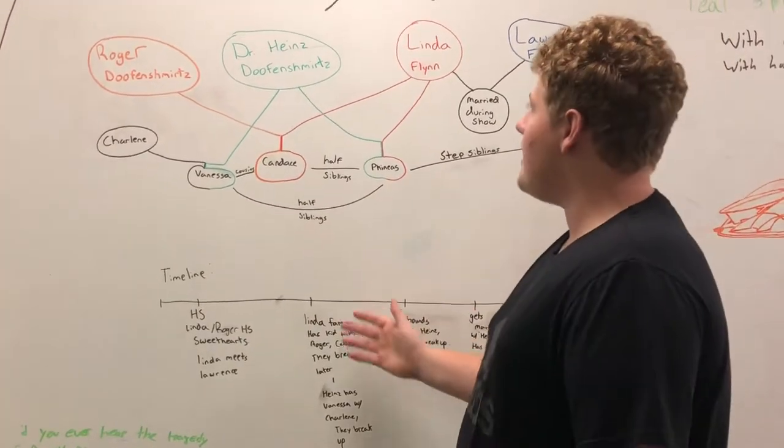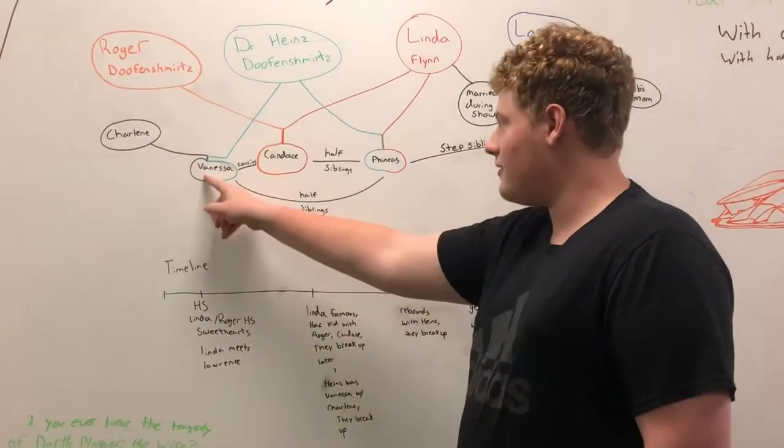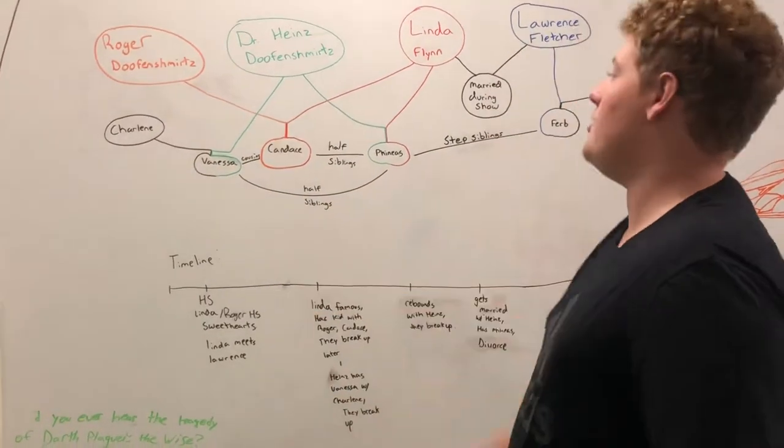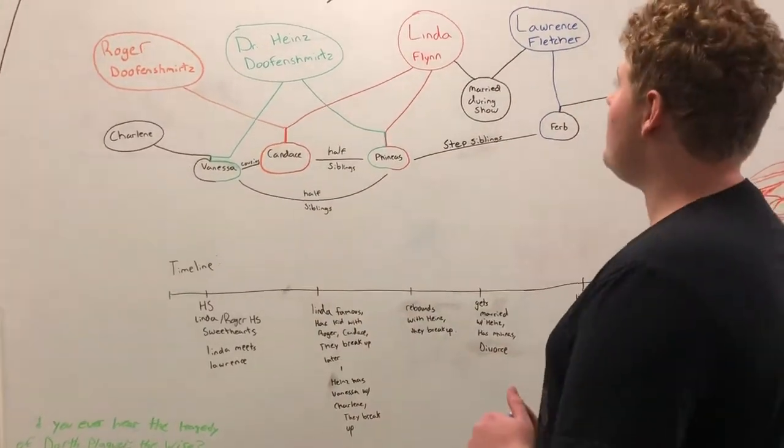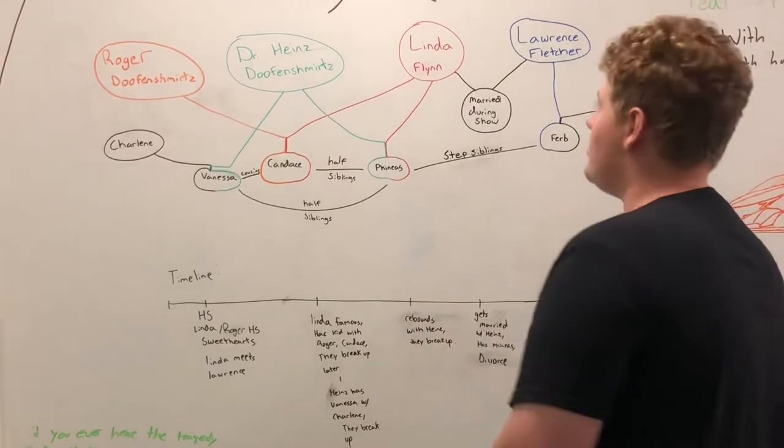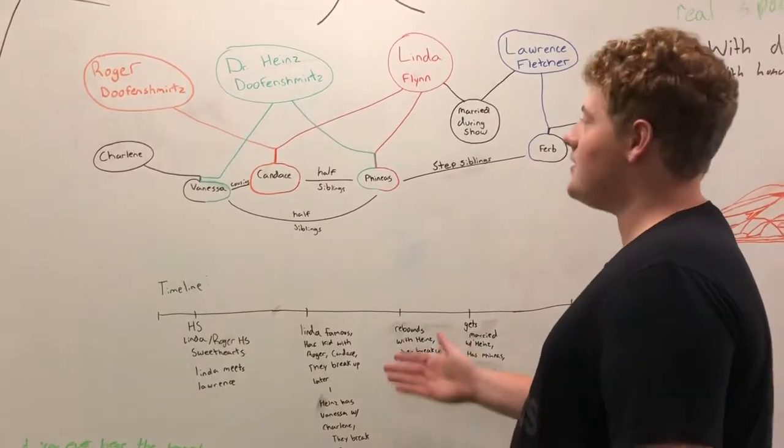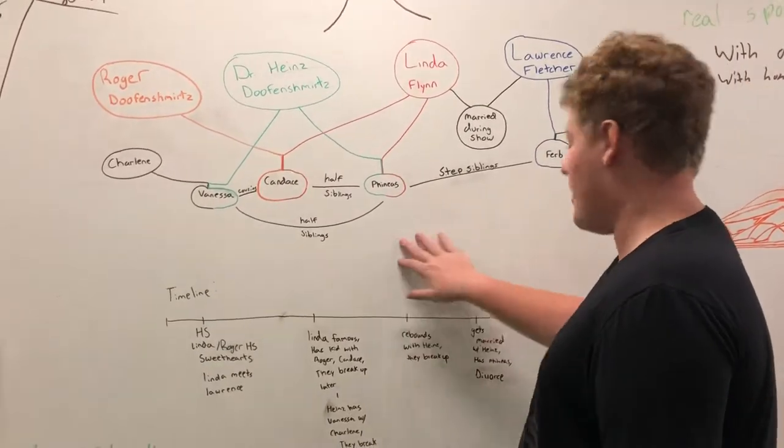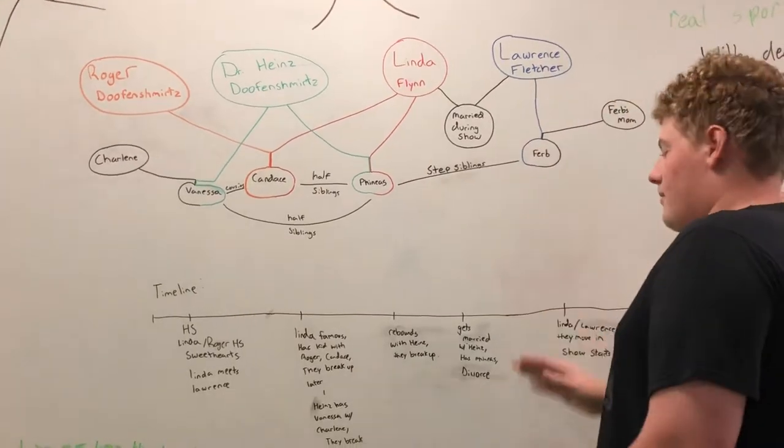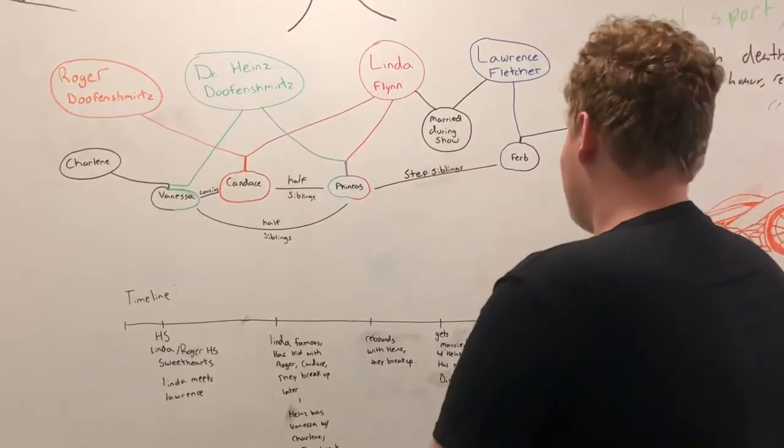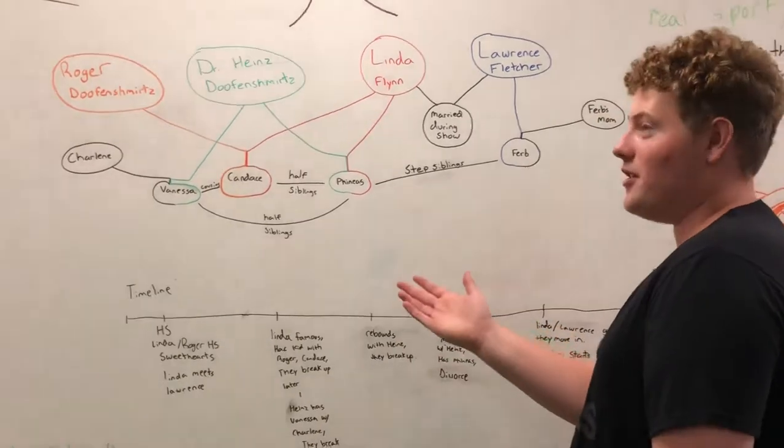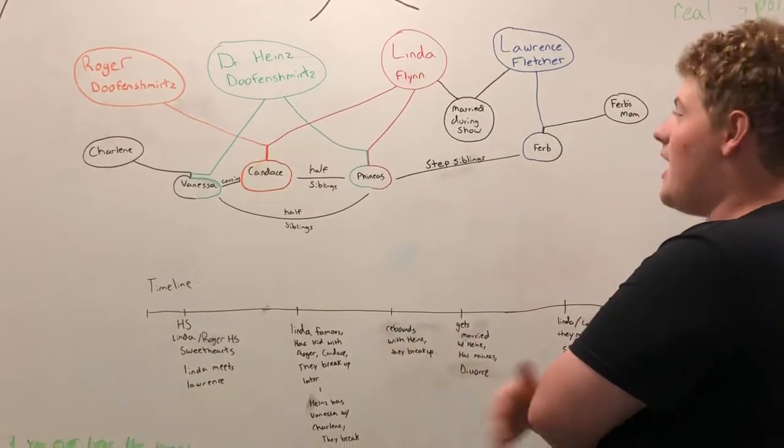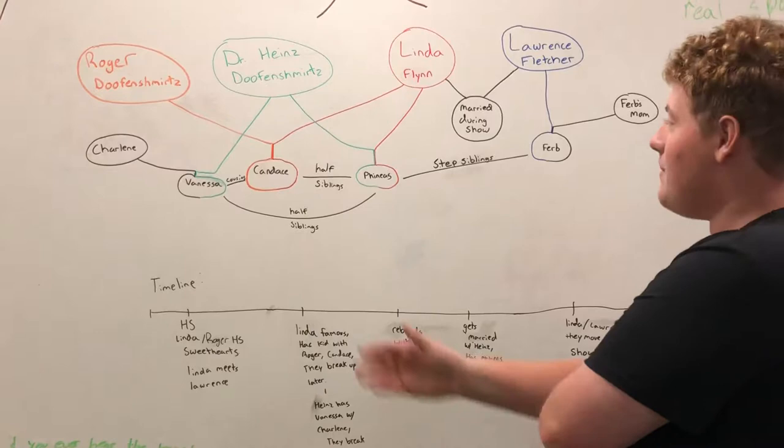Around the same time, Hines has a kid with Charlene, Vanessa, his daughter you see in the show, and they break up shortly after this as well. After she breaks up with Roger and has Candace, she rebounds with Hines, essentially. Nothing happens here though, and they break up. It's kind of blurry the exact timeline, but shortly after that, she does end up getting married to Hines Doofenshmirtz for a short amount of time. They have a son named Phineas.